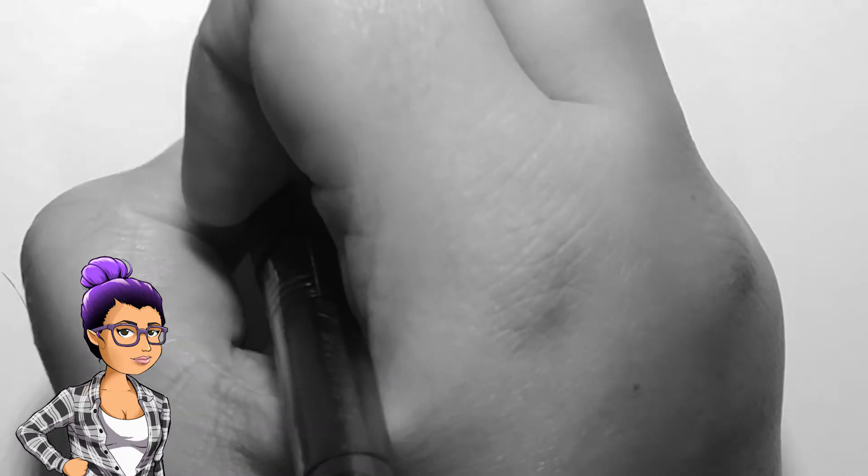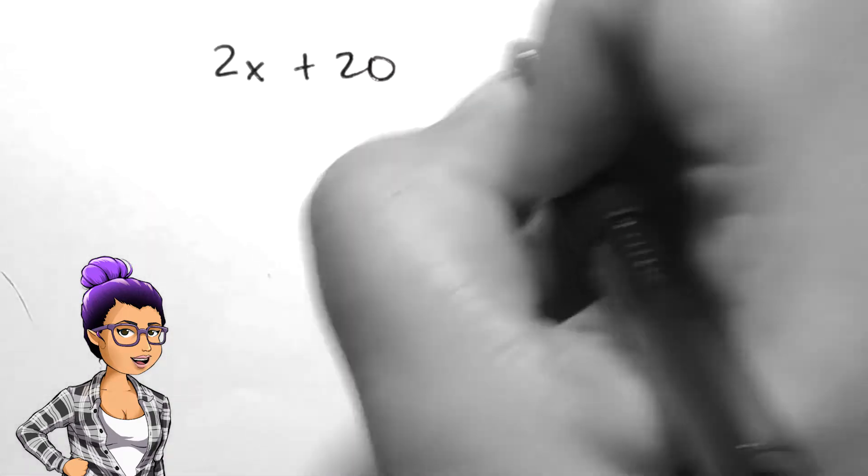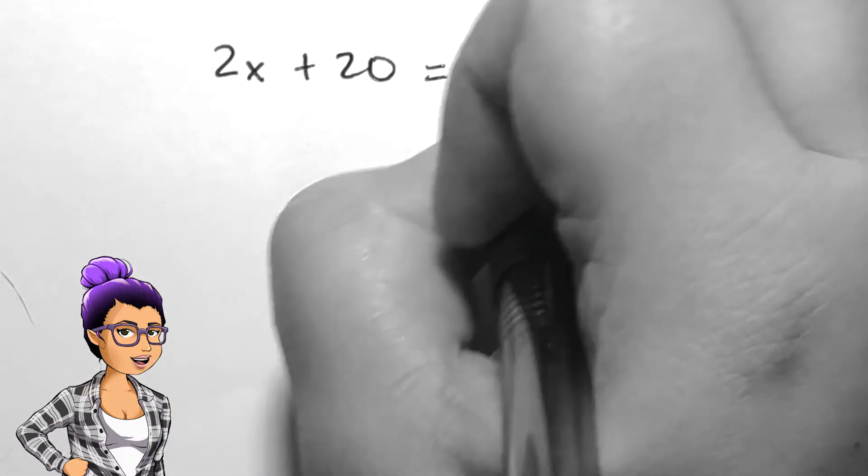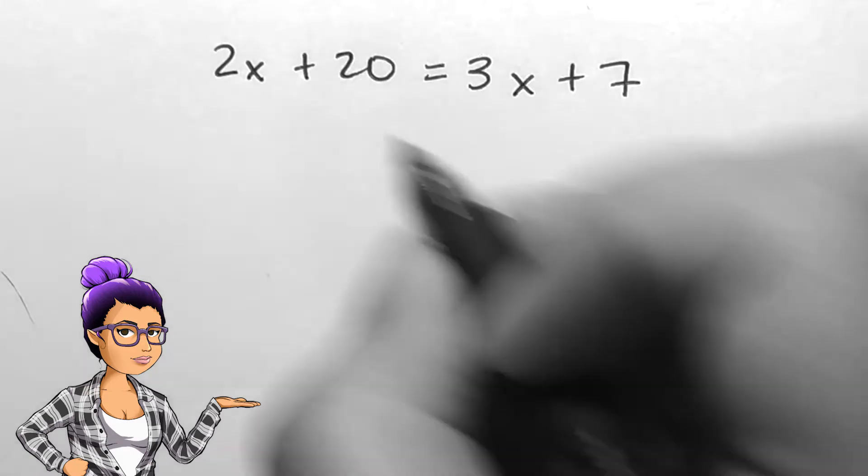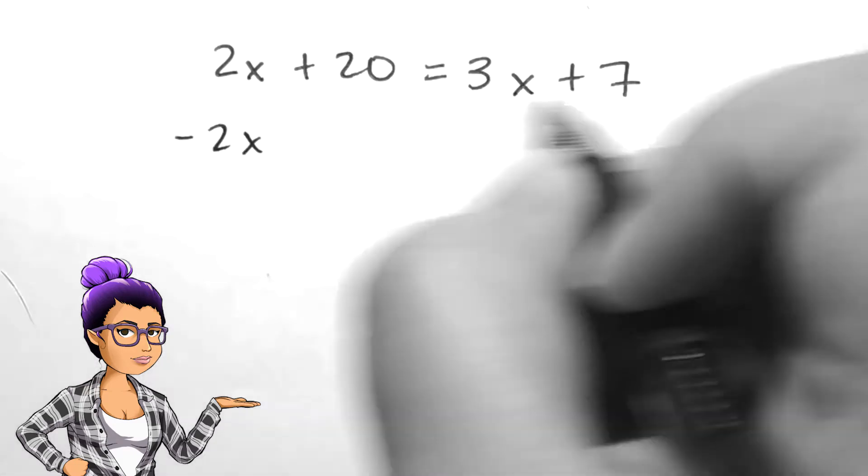Given 2x plus 20 equals 3x plus 7, we have two options for steps we can perform. We want x to equal something that only involves numbers, which means it is in our best interest to get all x terms on the same side.